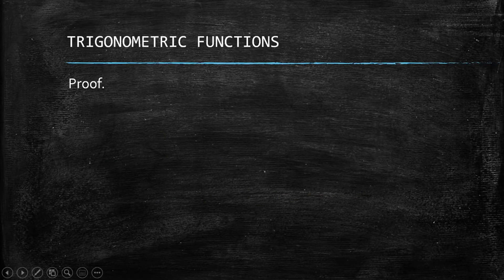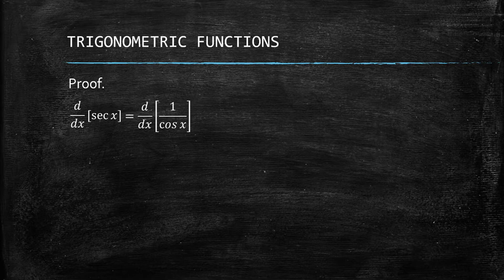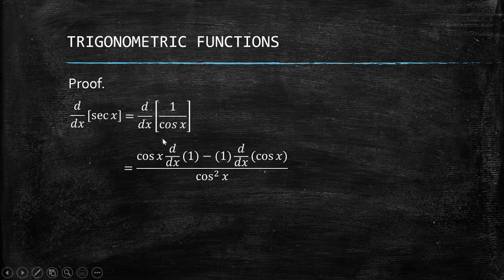Now let's look at the proof. Starting with sec(x): we use the reciprocal identity sec(x) = 1/cos(x). We already know the derivative of cos(x), so we'll apply the quotient rule here. You could also use the power rule, but we'll use the quotient rule for this proof.